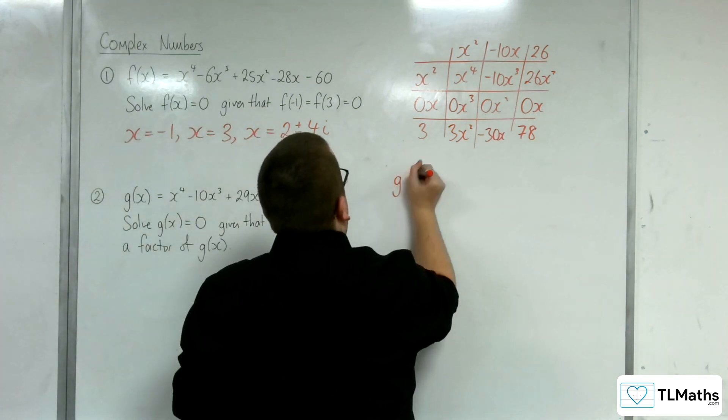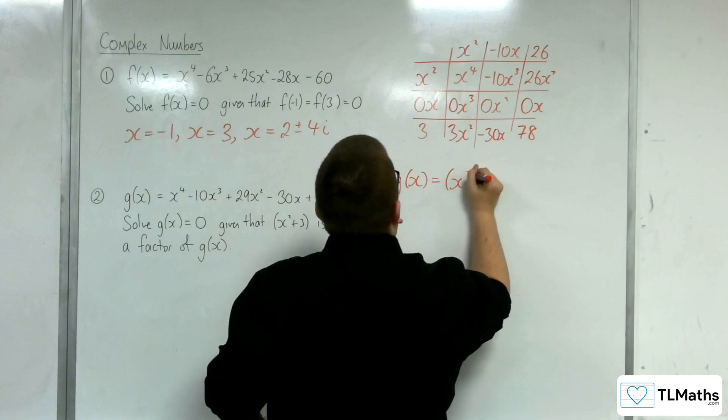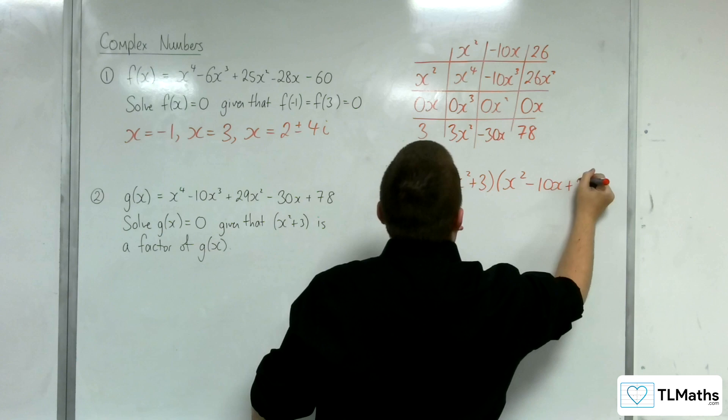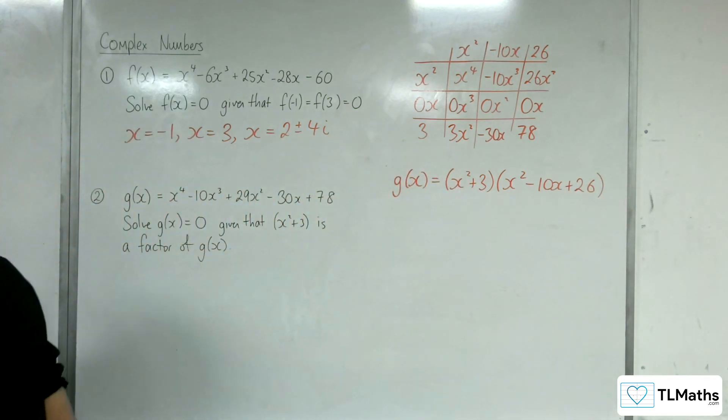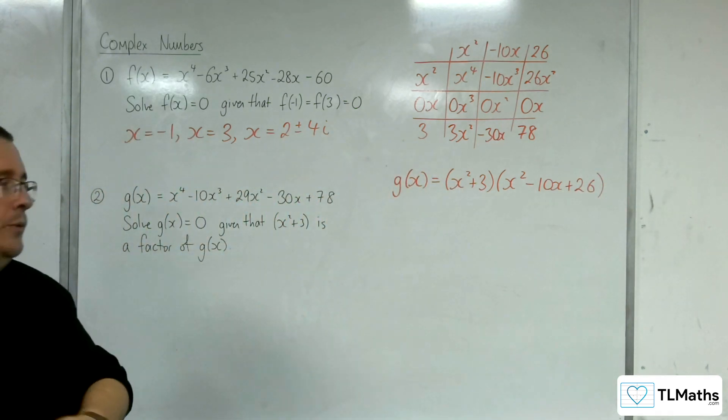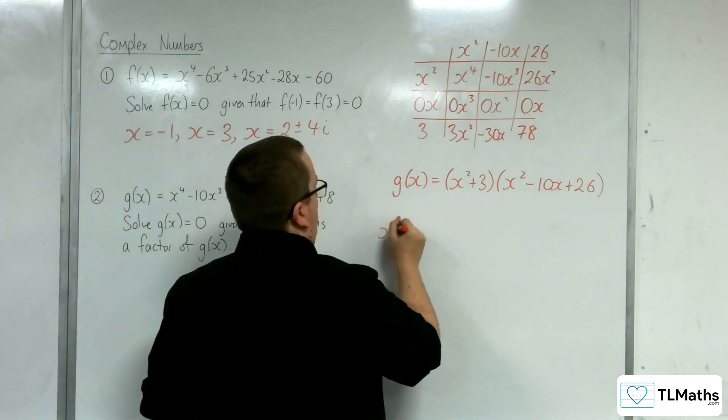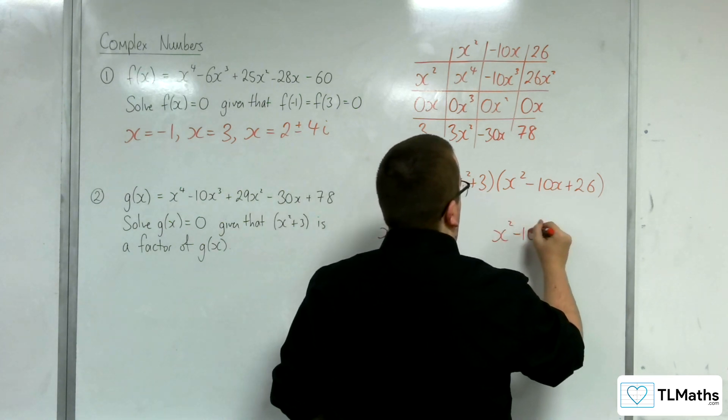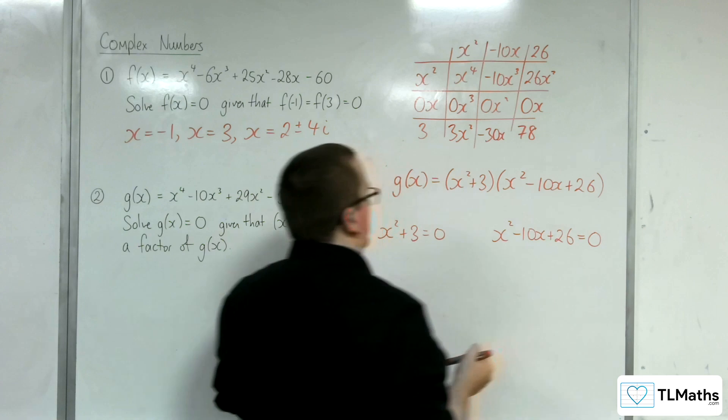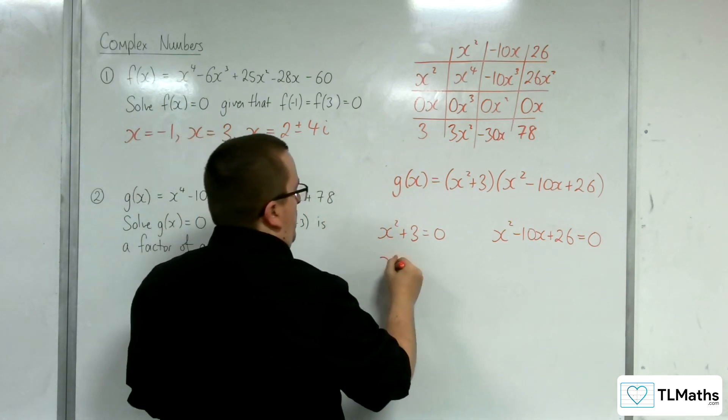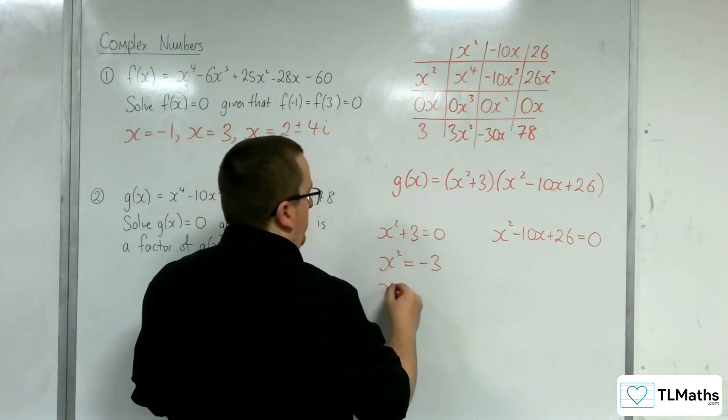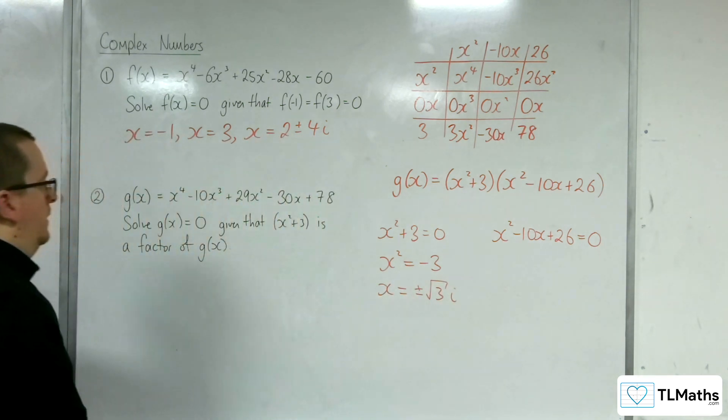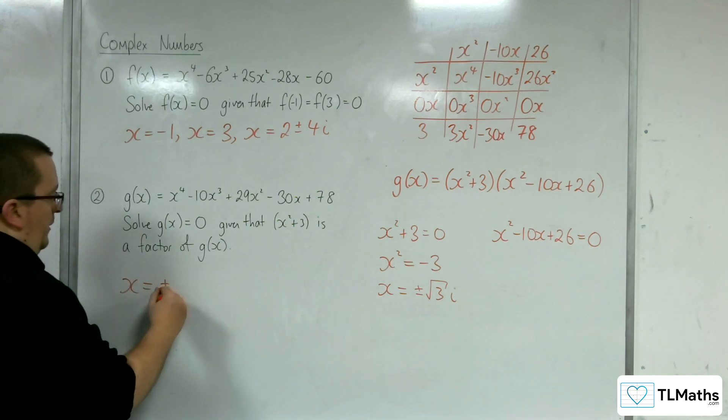So g(x) is equal to (x² + 3)(x² - 10x + 26). So solving g(x) = 0, either this bracket is 0, or this bracket is 0. This bracket being 0, that would mean that x² = -3. So x is ± √3i. So I've currently got two complex solutions.